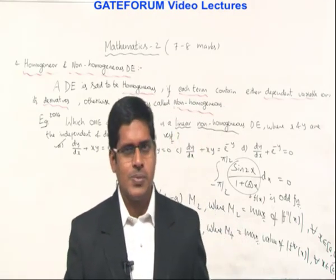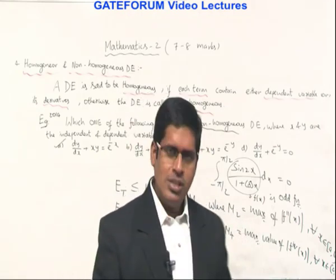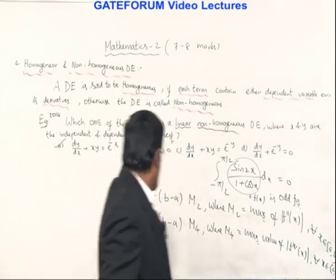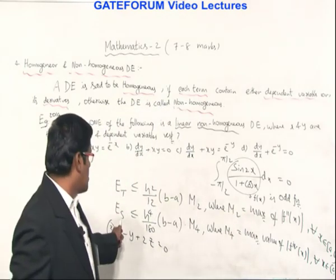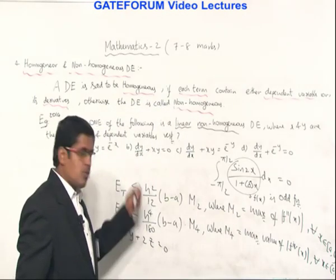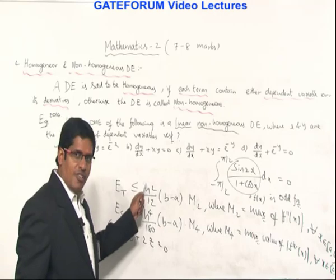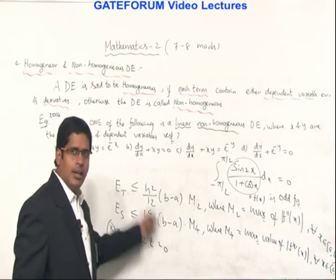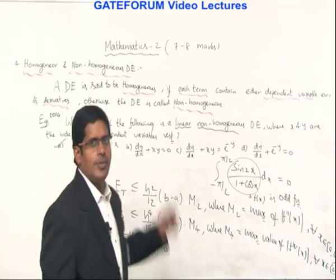Regarding the accuracy of Simpson's rule for step size h: this was explained five minutes ago. The error formula for the Trapezoidal rule and Simpson's rule is used to find the number of sub-intervals n to achieve the required accuracy. You can watch the recording for the details.